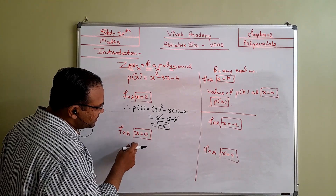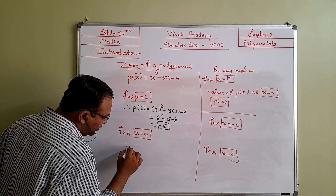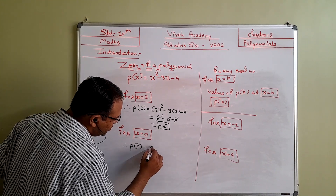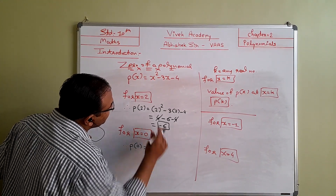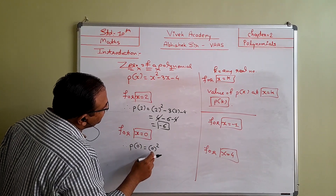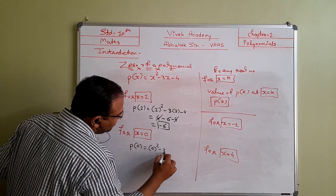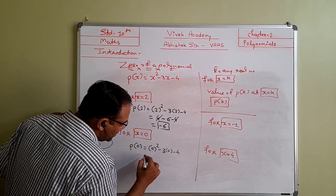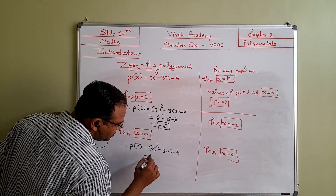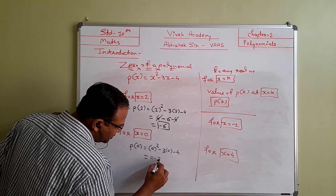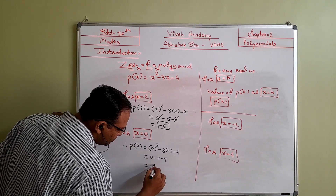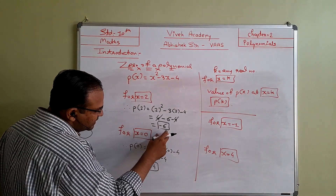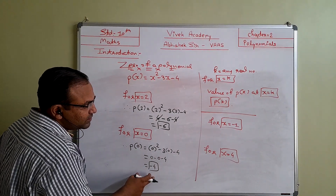The second case discussed is if you put x equal to 0. Instead of x we are going to write 0. So 0 squared minus 3 into 0 minus 4. 0 squared is 0, 3 into 0 is 0, and minus 4, so the answer is minus 4. For x equal to 2 we get minus 6, and for x equal to 0 we get minus 4.